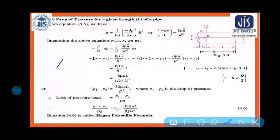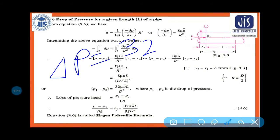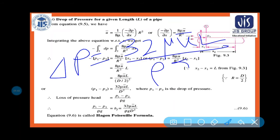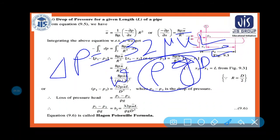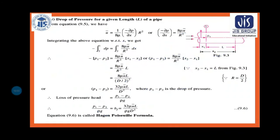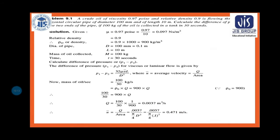The Hagen-Poiseuille formula: ΔP = 32μu̅L/(ρgd²), where ρg can also be written as w (specific weight), and it equals (p₁ - p₂)/ρg. This is how you calculate the pressure drop. Now let us solve some numericals.